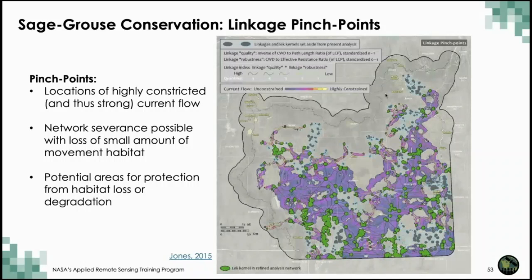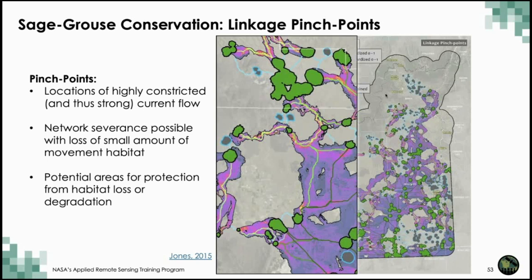One of the first features mapped in the Circuitscape model were pinch points — locations where flow is constrained or intensified — visible with warmer colors, while violet follows the original linkage zones. At pinch points, network connectivity could be severed with the loss of a relatively small amount of dispersal habitat, making them key places for prioritized habitat protection. The results can be used to support planning and management for sage grouse — mapped corridors and metrics of relative linkage quality and robustness can be combined with population data or other management factors to inform and prioritize conservation in these regions.